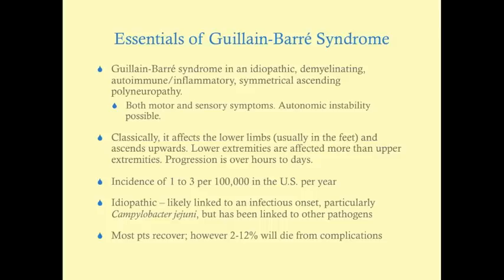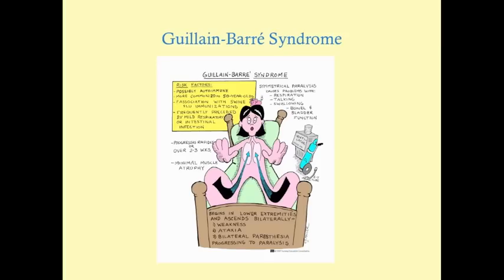Two to twelve percent of patients will die from complications, but these are usually patients who are already quite sick. It is usually linked to an infectious onset, particularly diarrheal illness caused by Campylobacter, but it has been linked to other pathogens as well — including CMV, herpes, Lyme disease, leprosy, and HIV. Risk factors include possible autoimmune predisposition, younger adult age, and association with certain vaccines, though today's vaccines have a very low association and you are far more likely to get Guillain-Barré from an infectious cause.